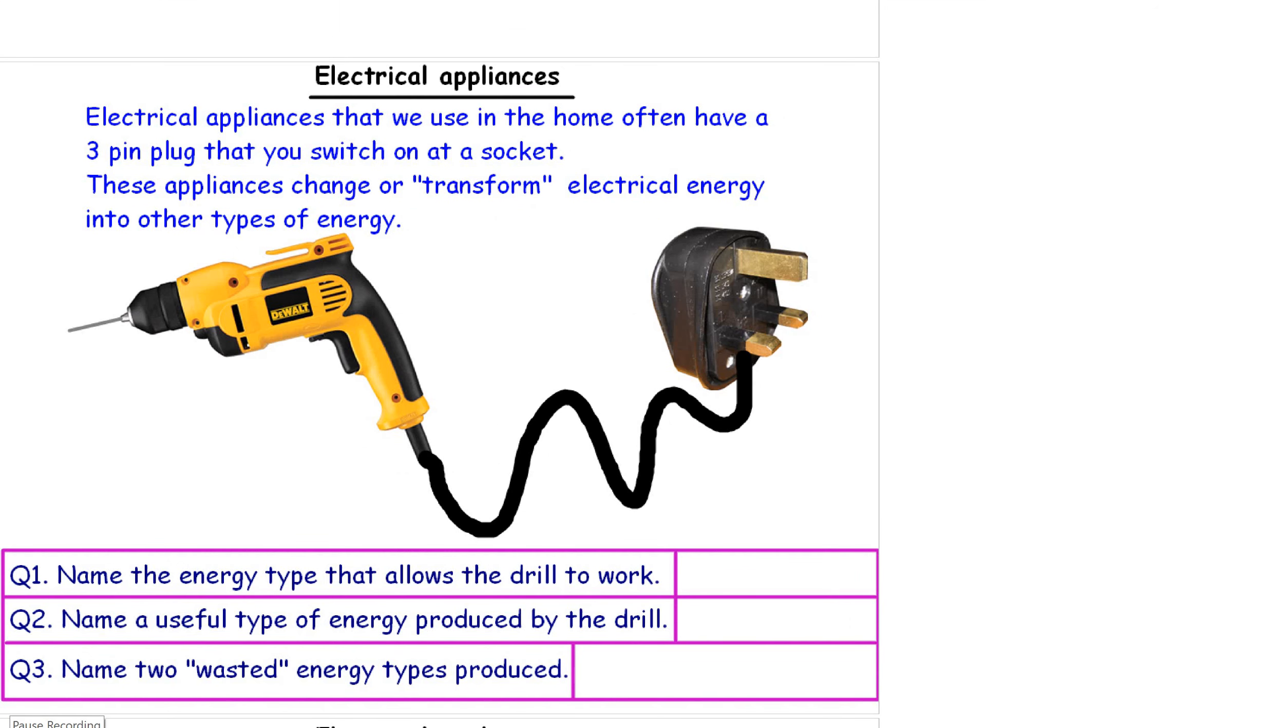Right, electrical appliances. Electrical appliances that we use in the home often have a three pin plug, one two three. These appliances change or transform electrical energy into other types of energy. Have a read through questions one, two, and three and see if you can't come up with the answers whilst I pause the video temporarily.